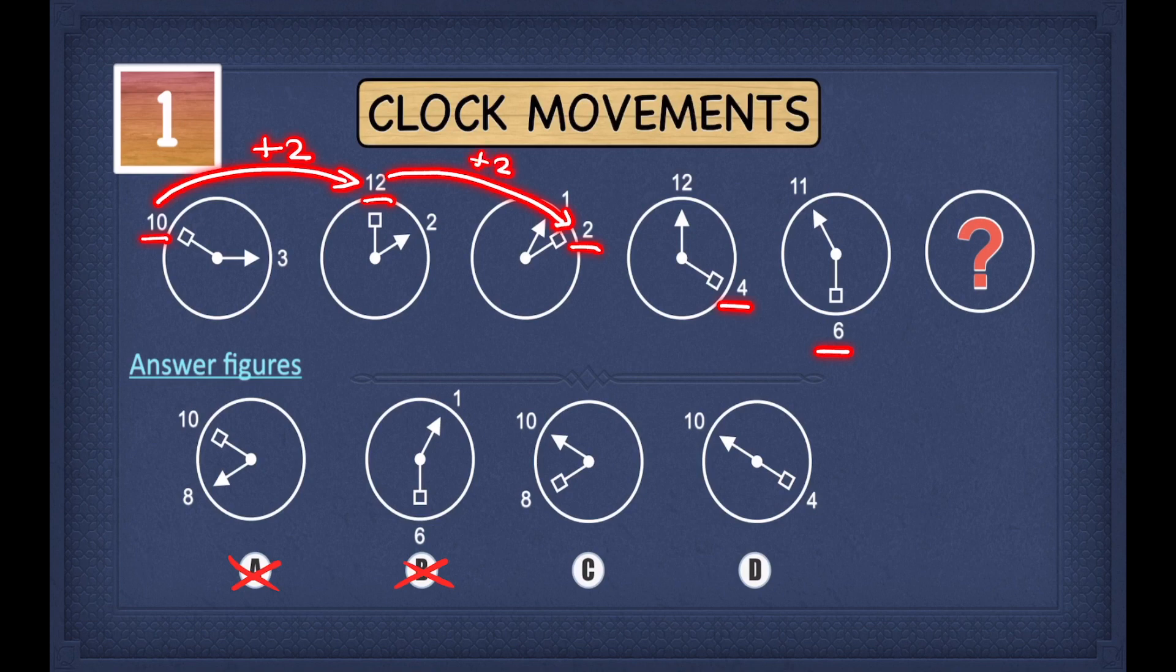Because in a clock, if you're adding, you're moving one step forward. So if you're adding two to twelve, you're moving two steps from twelve, and you're moving those two steps forward. So that means you land at two.